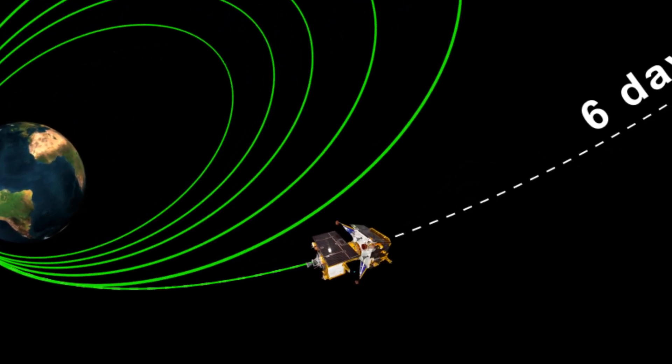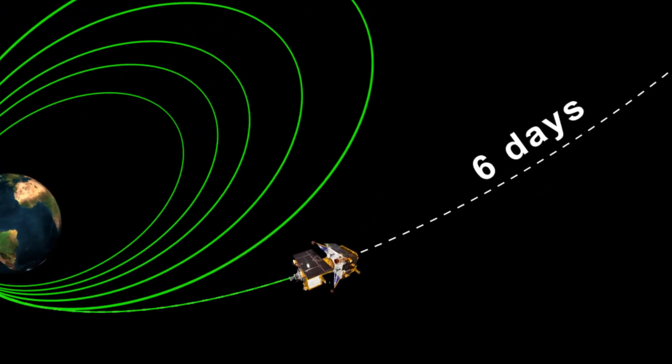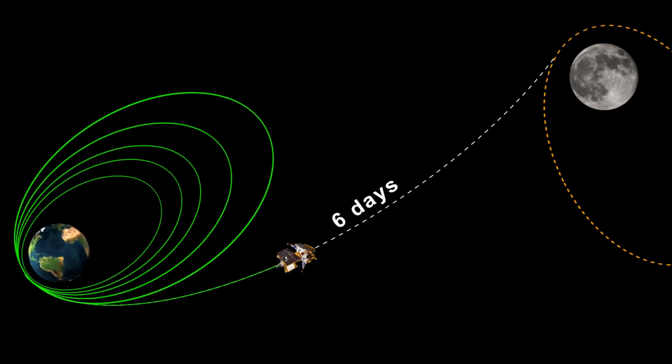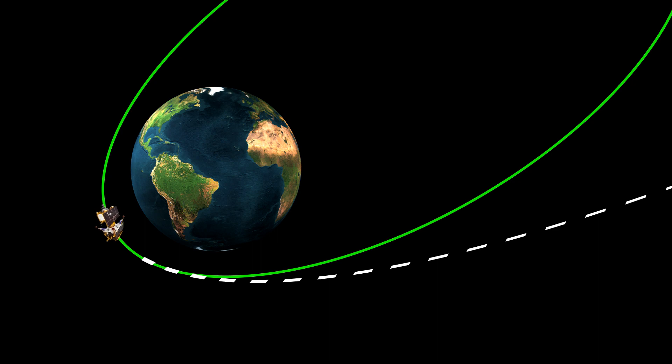Chandrayaan-3 is only six days away from reaching the moon orbit by performing trans-lunar ejection, which will slingshot the spacecraft towards the moon. TLA is planned between 12 am and 1 am on August 1.